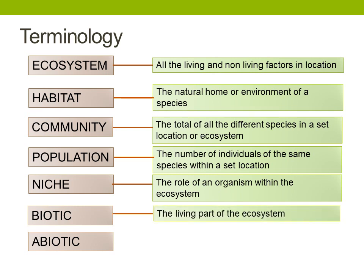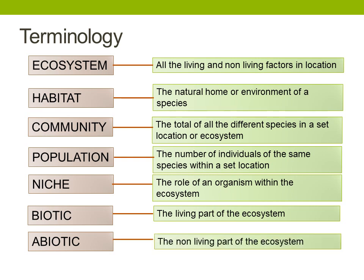Biotic is the living part of the ecosystem — everything that is alive: all the plants, all the animals, the fungi, and also the microbes as well. People often forget about that part because they're not very visible, but those are also an essential part of the ecosystem. And lastly, abiotic is the non-living part of the ecosystem — all the other factors which contribute to the character of that ecosystem, for example the amount of rainfall.